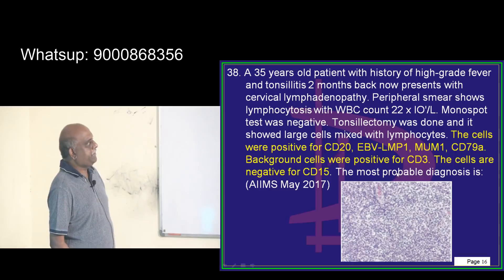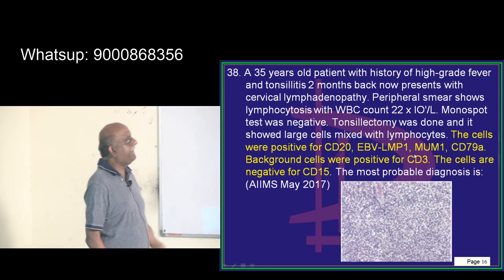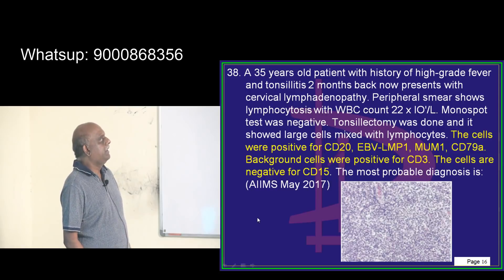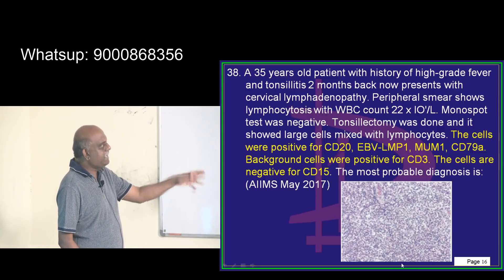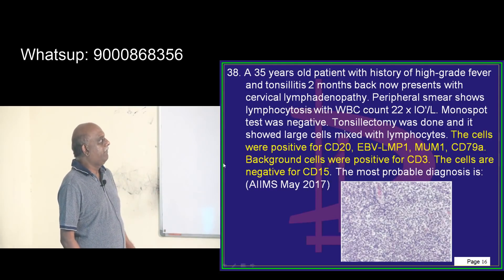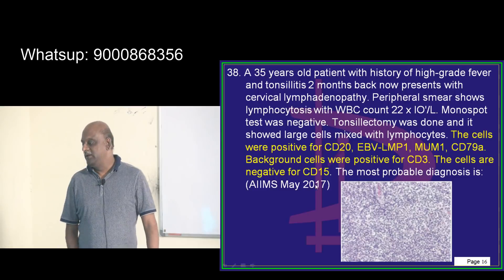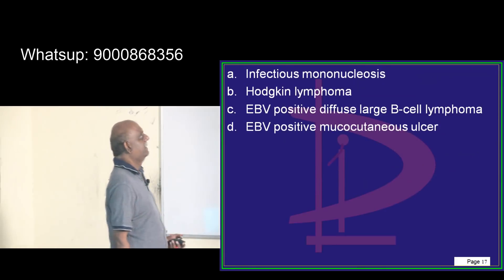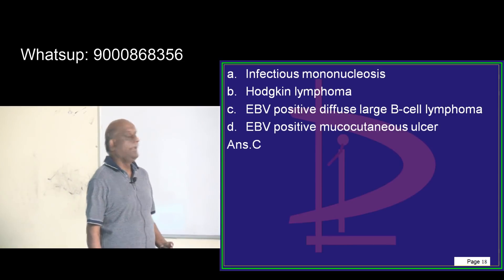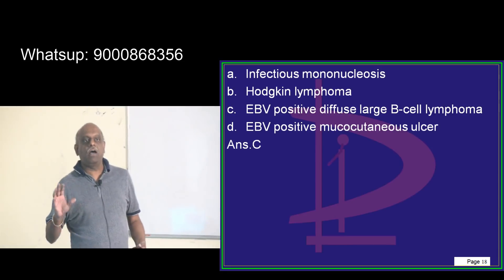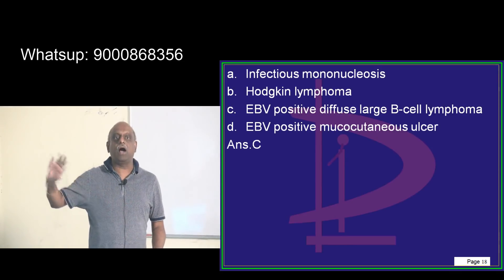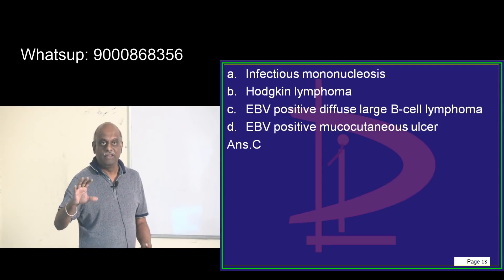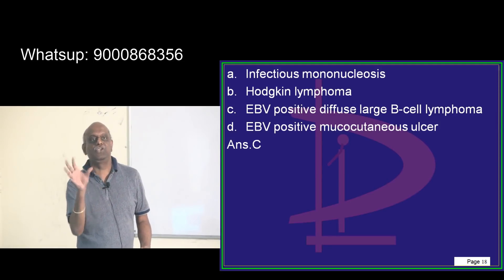CD20 positive, Epstein-Barr virus, LMP1 and CD79A were also positive. Background cells were positive for CD3 but CD15 negative. The diagnosis is Epstein-Barr virus positive diffuse large B-cell lymphoma, in view of the CD picture.